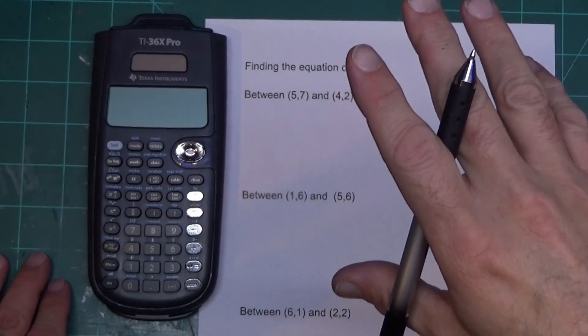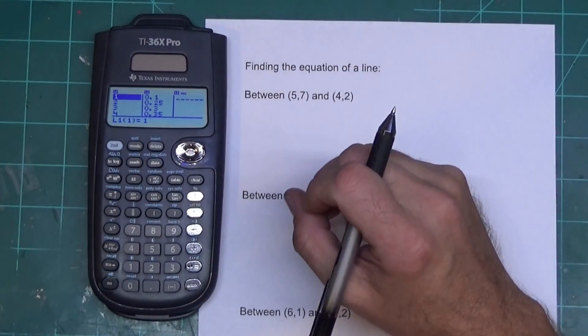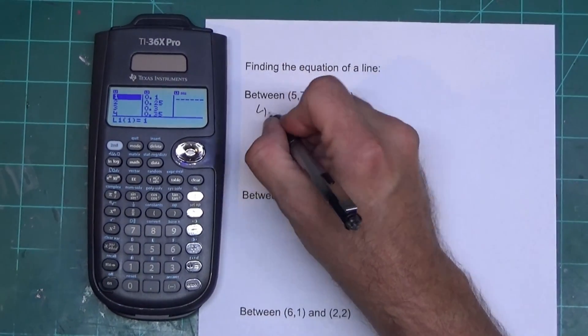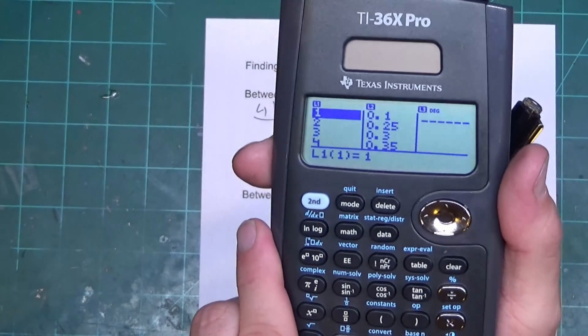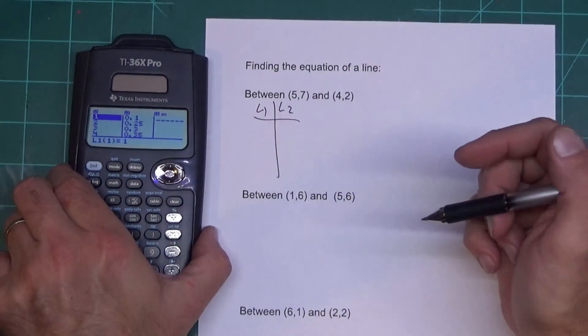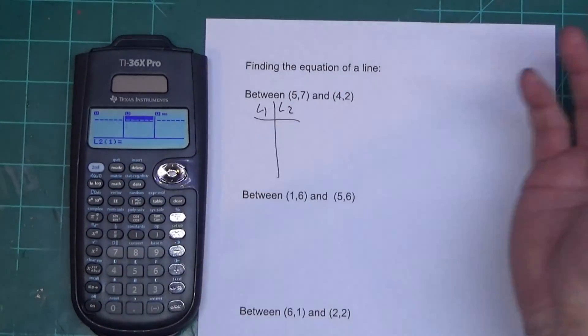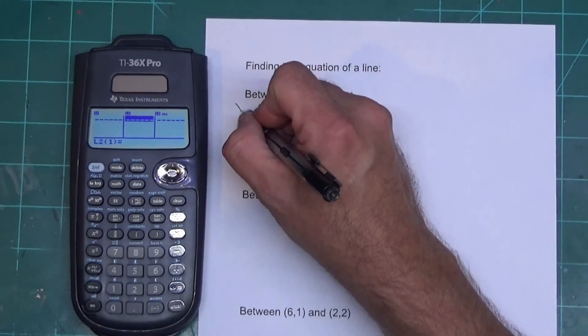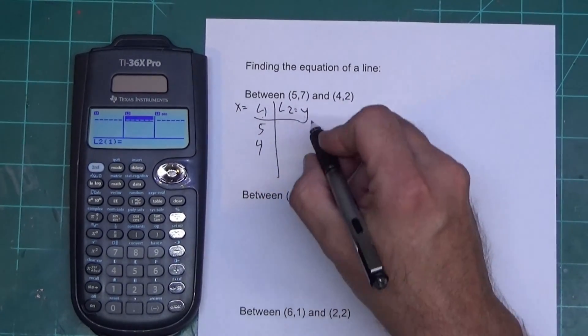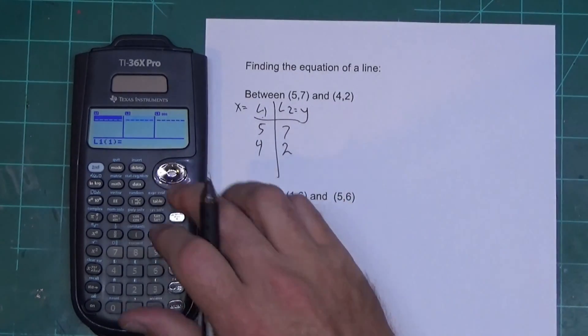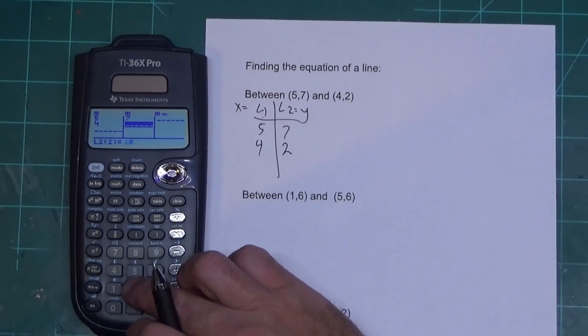So what you do to get these data points in here is you're going to turn it on. There's a data button, you're going to press data. And what you get when you hit data is there's a list for L1 and there's a list for L2. Now what you're going to do is put X in L1 and Y in L2. So I'm going to have 5 and 4 in L1, and 7 and 2 in L2. So over here in L1 I'm going to put 5 enter, 4 enter. Over here in L2 I'm going to put 7 enter, 2 enter.